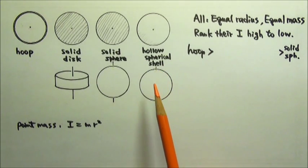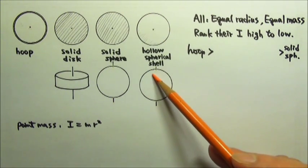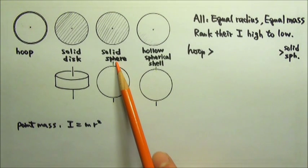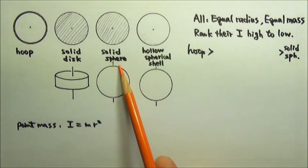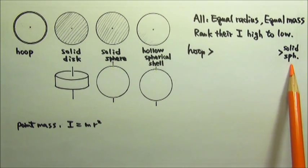If we compare these two, we can see that the spherical shell does not have mass in here to be close to the axis. So compared to these two, the solid sphere has bigger fraction mass close to the axis, so it has the smallest rotational inertia.